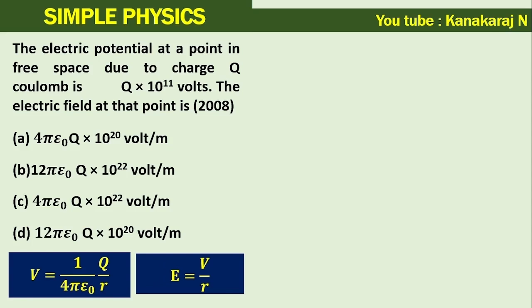Let us start with the first formula. v equals 1 upon 4 pi epsilon r times q upon r, which is given in the problem as q multiplies 10 power 11 volts.